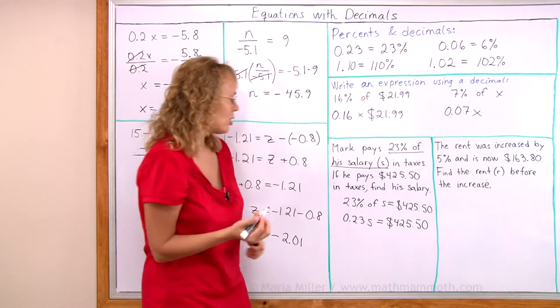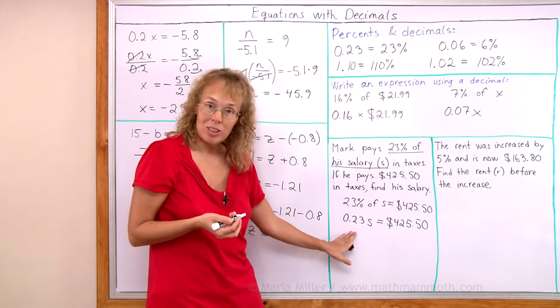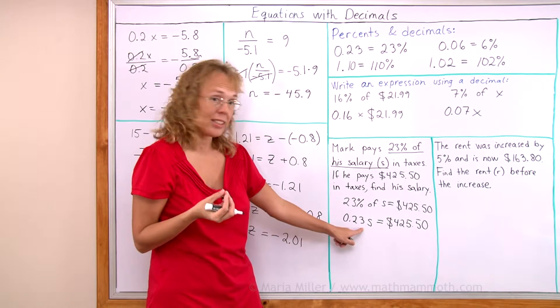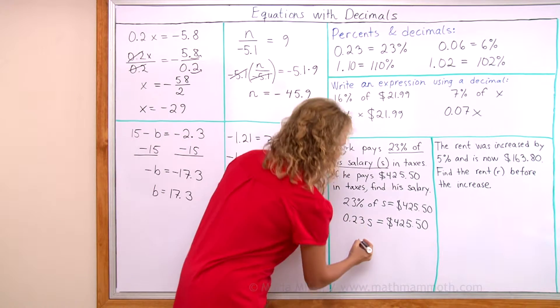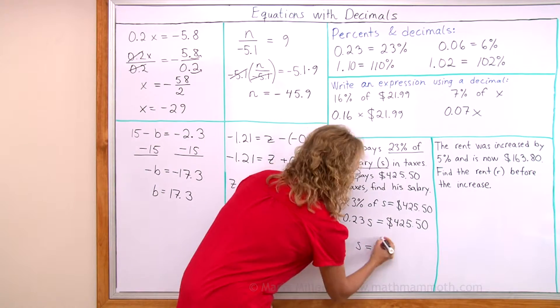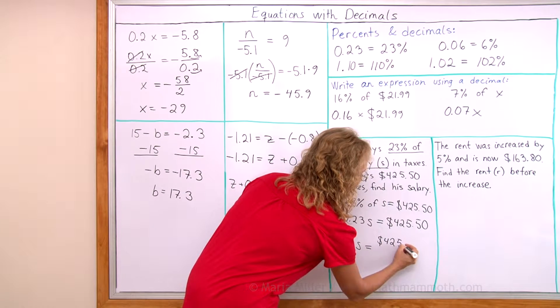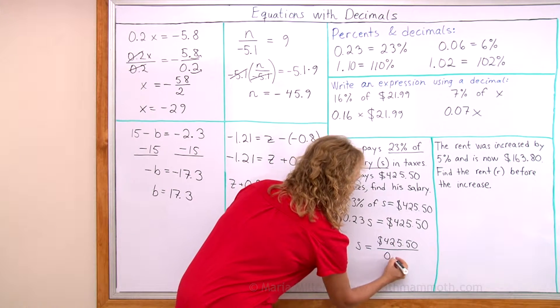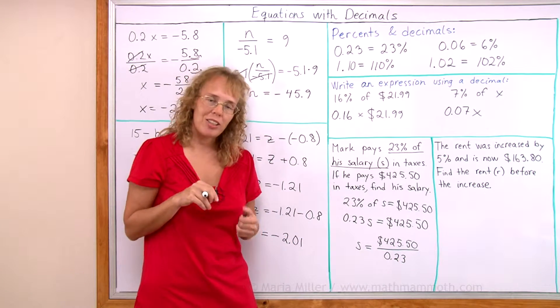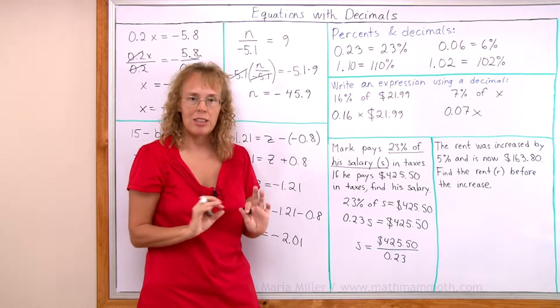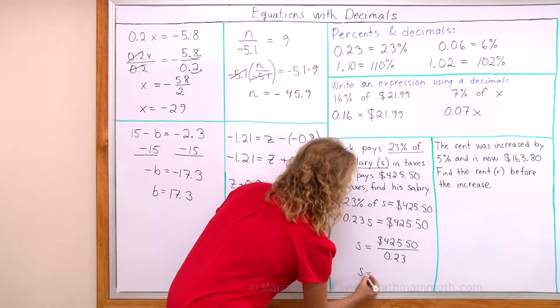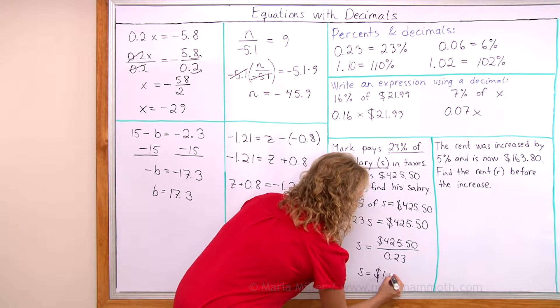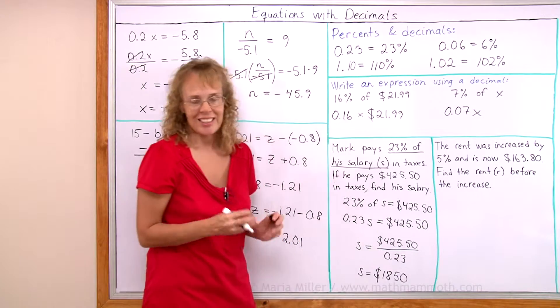And now the equation is ready to be solved. It's a multiplication equation, so we divide both sides by this decimal, 0.23. And so we get s equals this money amount, $425.50 divided by 0.23. Now you take your calculator and punch those numbers in and divide. And we get, I've done that beforehand, $1,850. So that is his salary.